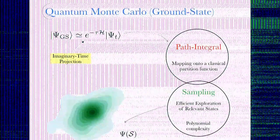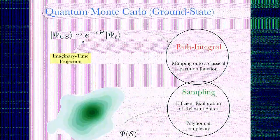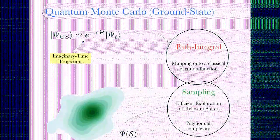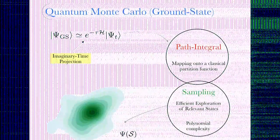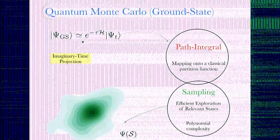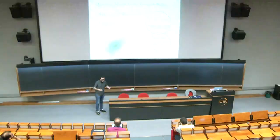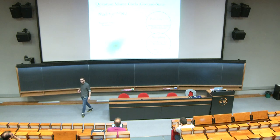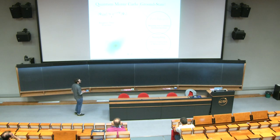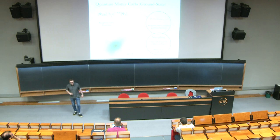There are techniques that exploit other concepts. For example, quantum Monte Carlo techniques do not store the exponentially many coefficients of the wave function exactly, but instead sample efficiently from the wave function using a mapping onto an equivalent classical system. Typically, this is realized through the path integral mapping.